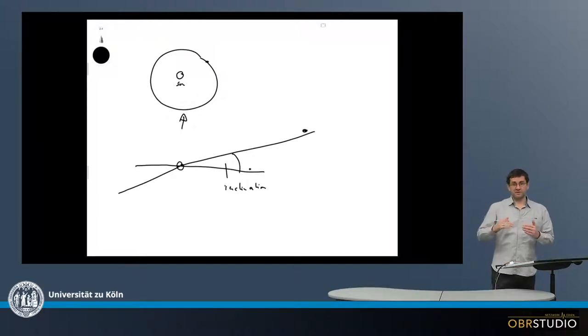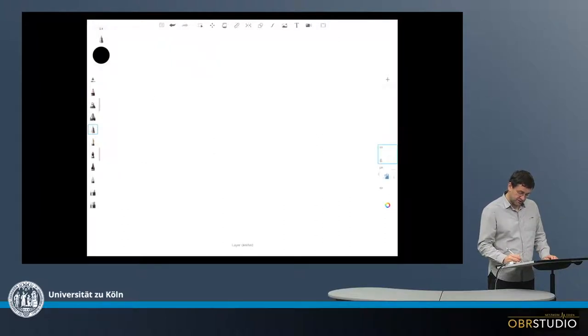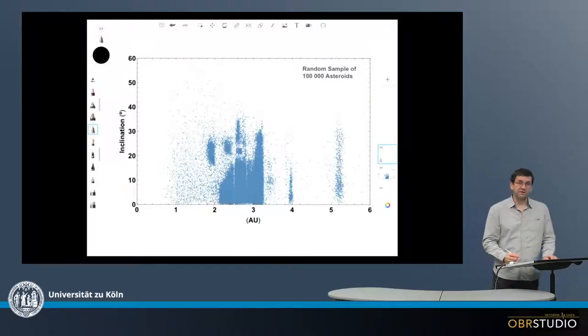Many asteroids have an inclination against the Earth's plane, and this looks as shown here in the following. In this plot, there's the distance of the asteroids from the sun on the x-axis, and on the y-axis is the inclination.